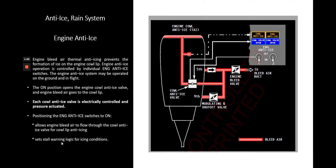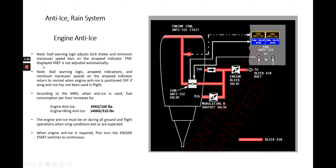Set stall warning logic for icing conditions. Stall warning logic adjusts stick shaker and minimum maneuver speed bars on the airspeed indicator. The FMC (flight management computer) displayed VREF is not adjusted automatically. Stall warning logic, airspeed indications, and minimum maneuver speeds on the airspeed indicator return to normal when engine anti-ice is positioned to off, if wind anti-ice has not been used in flight.